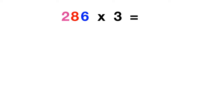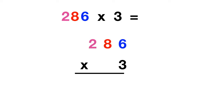We can begin by writing out 286 times 3. Then we'll start by multiplying 3 times 6 ones. 3 times 6 gives us 18, which we've written by regrouping.